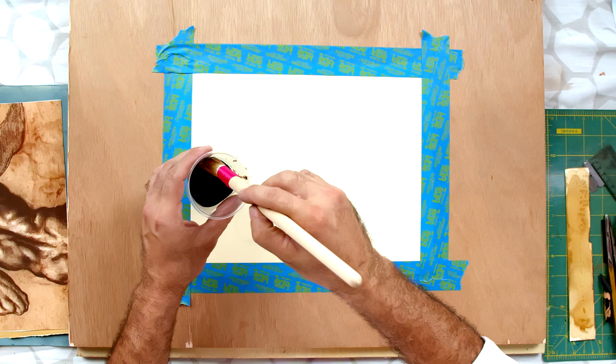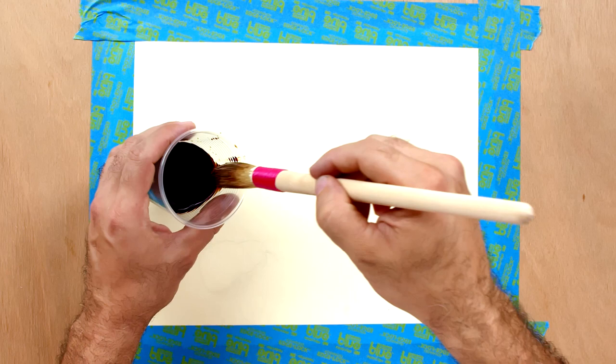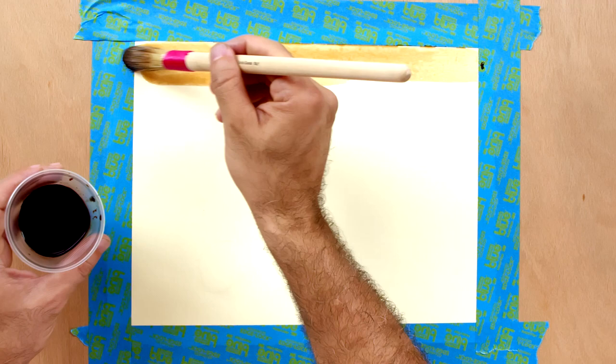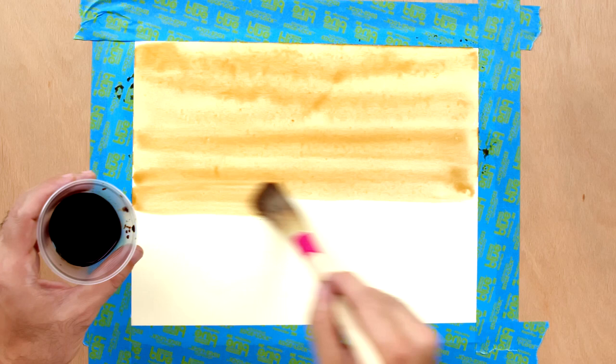So I'm going to go ahead and soak the brush and look at what a beautiful tone it yields. This is a perfect ground for charcoal or black chalk. In this case I'm going to be using conte crayon, which is similar to black chalk.